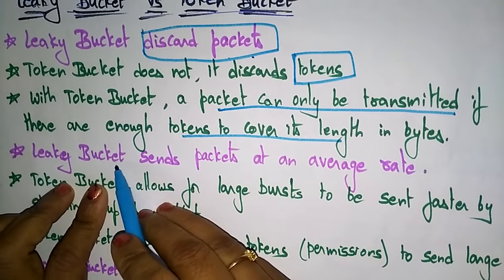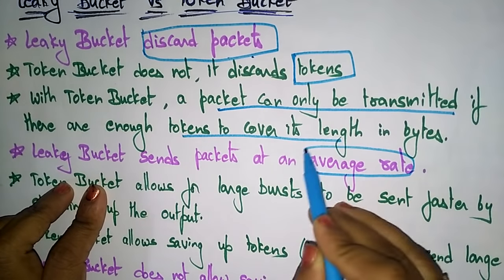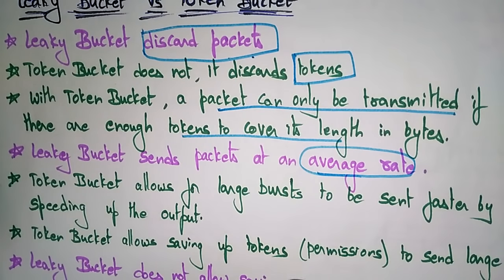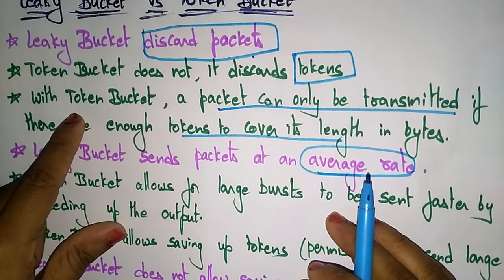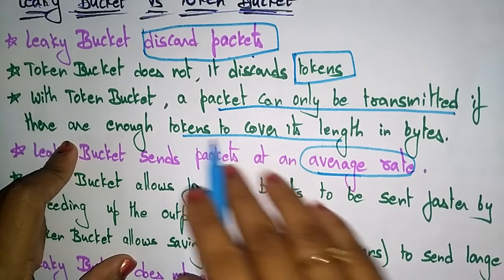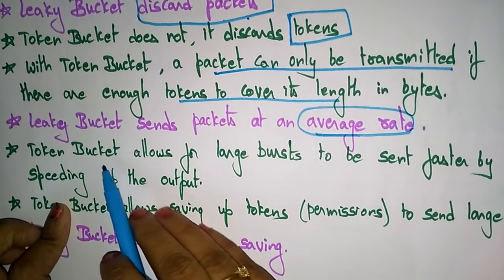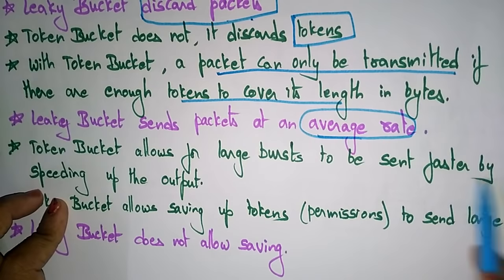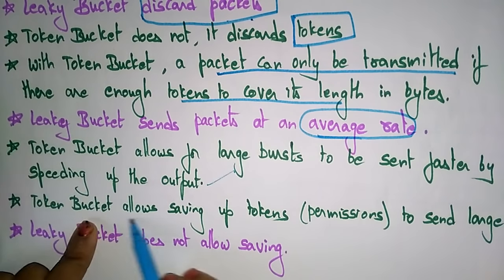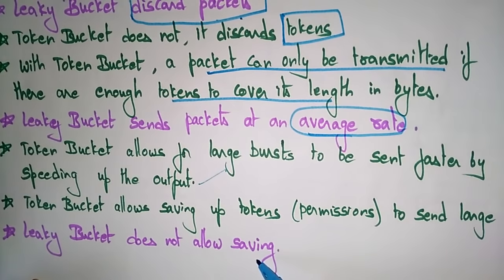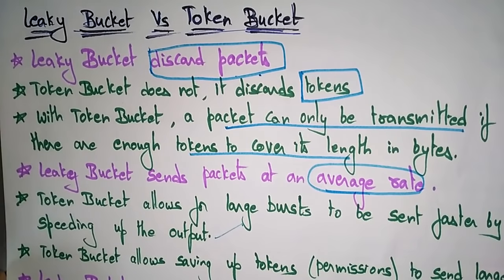In the leaky bucket, packets are sent at an average rate, so bursty traffic can cause overflow — bursty traffic is more problematic in the leaky bucket. In the token bucket, a packet can only be transmitted if there are enough tokens covering its length in bytes. The token bucket allows large bursts to be sent faster by speeding up the output, and it allows saving up tokens to send large bursts. The leaky bucket does not allow saving. This is the difference between leaky bucket and token bucket.